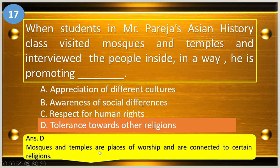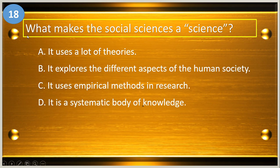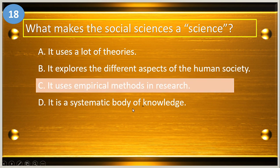Mosques and temples are places of worship connected to certain religions. Number eighteen: what makes the social sciences a science? A, it uses a lot of theories; B, it explores different aspects of human society; C, it uses empirical methods in research; and D, it is a systematic body of knowledge. The answer is letter C, it uses empirical methods in research.